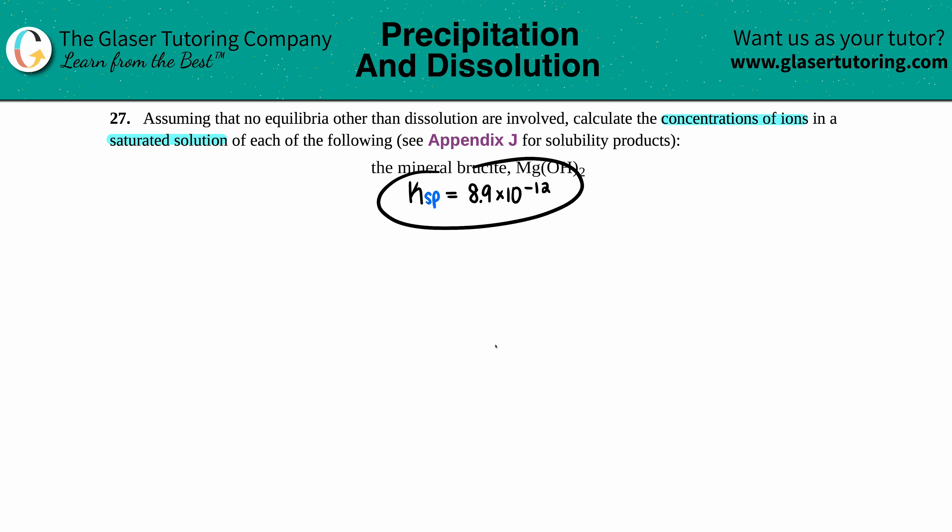I went to the back of the textbook to find the Ksp value for magnesium hydroxide, and it's 8.3 times 10 to the negative 12th. They told us it's a saturated solution, which means there's no other common ion affecting the solubility of this compound.